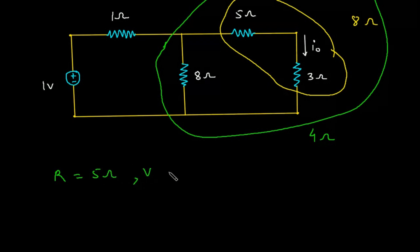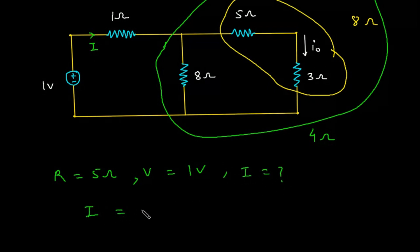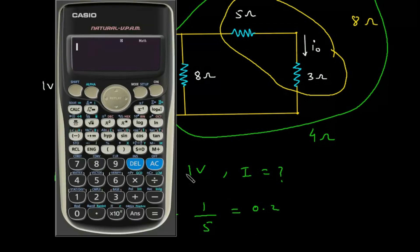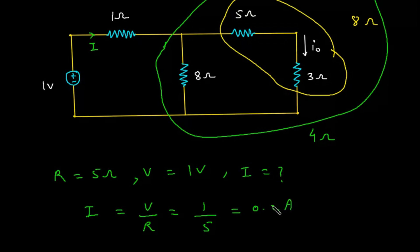V is equal to 1V. And what we have to find? We have to find I first, then I.O. So I is equal to V by R. V is 1, R is 5, so this will be 0.2 Ampere.